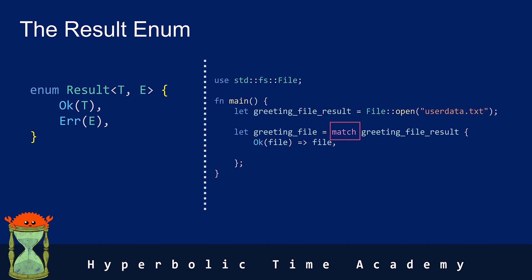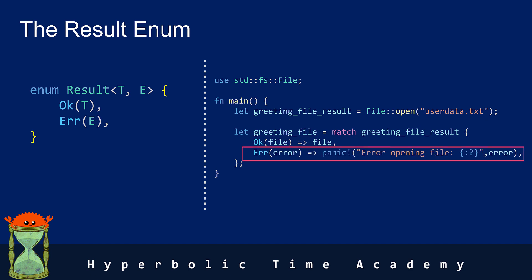The match expression is similar to a switch statement in other languages. It allows us to perform different actions based on the different possible values of an expression. In our case, the expression is greeting_file_result. If the expression is OK, meaning the file was opened successfully, we simply return the file from the match expression. If it is an error, we call the panic macro with a custom error message. We've just turned a potentially crash-inducing scenario into a recoverable situation, and that's just scratching the surface of what you can do with the result enum.